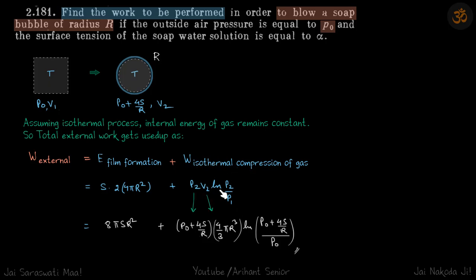So work done in isothermal compression is p₂v₂ln(p₂/p₁), and all these values are known to us. p₂ inside the bubble is p₀ plus 4S/r, v₂ is 4/3πr³, and again p₂ is this and p₁ is p₀, and this is 8πSr².